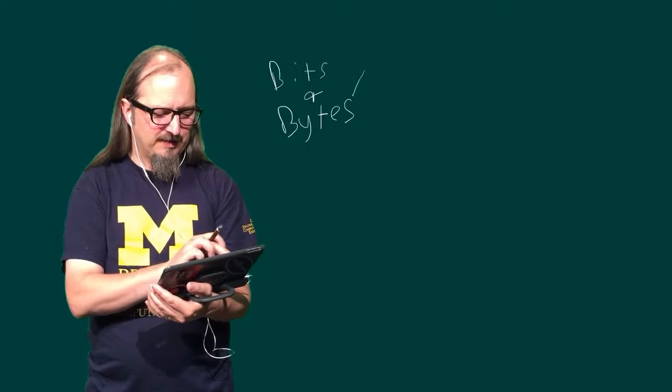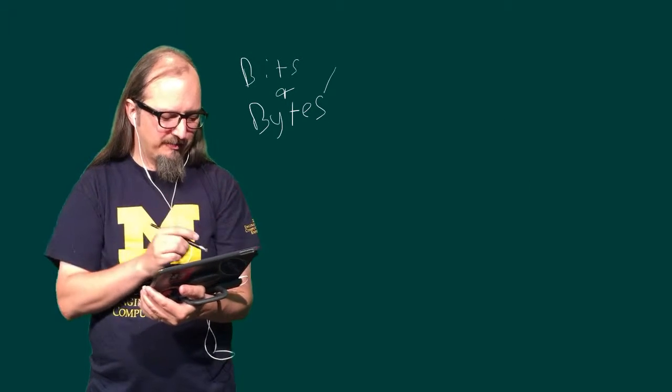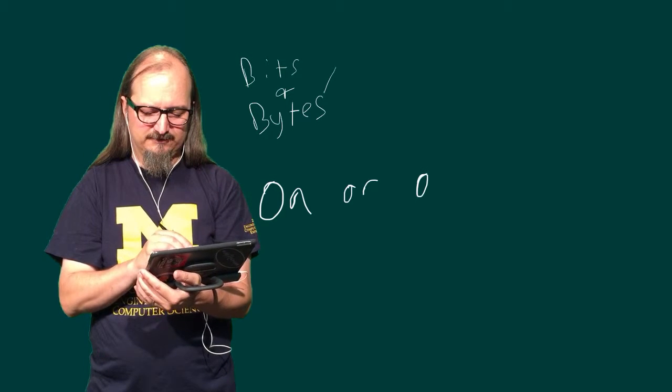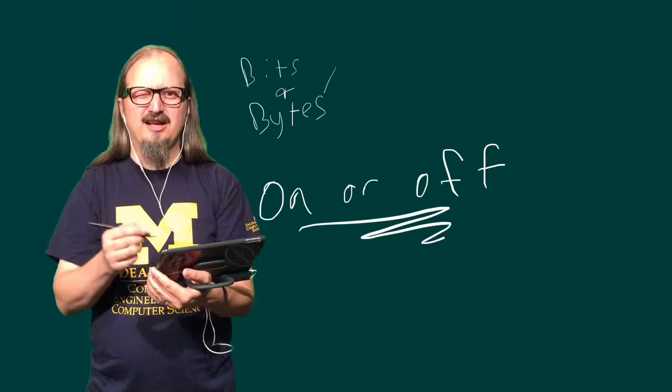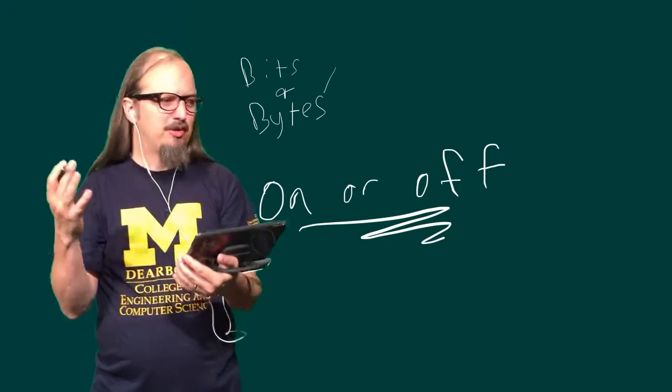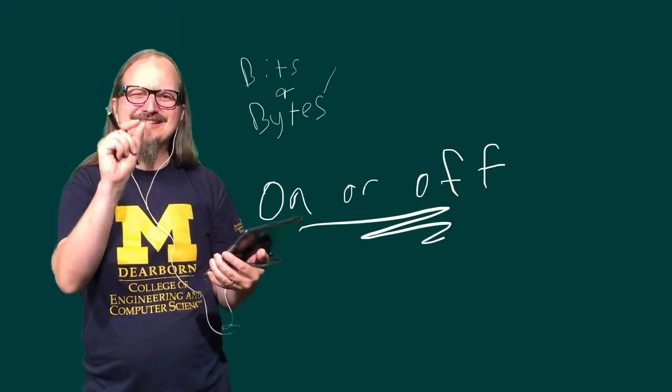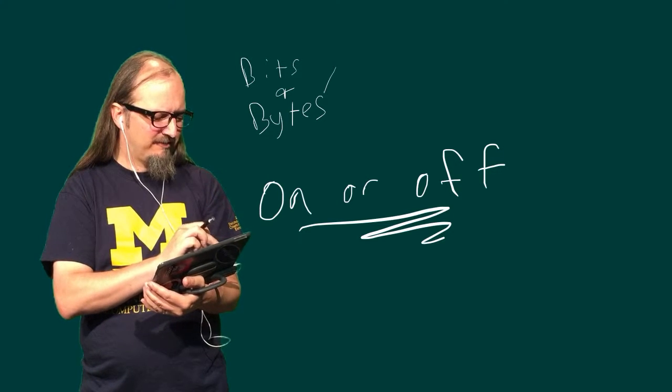On computers we have something called bits, and bits indicate an on or an off. It's a 1 or 0, a plus or a minus, a true or a false—that's a bit. It's just one very simple piece of information.